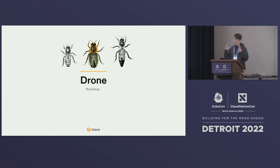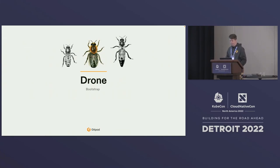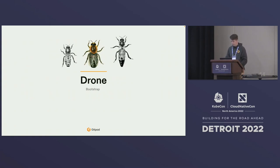Now let's talk about drones. The worker bee makes up the mass of bees in a hive — the mass of workloads you would run. The drone doesn't have a clean equivalent in this analogy. You could think of it as a way to bootstrap the hive. In nature, the purpose of a drone is to ensure genetic variance within the bees.